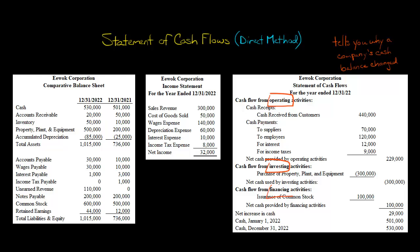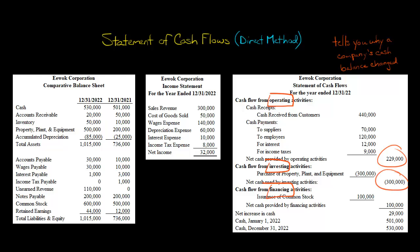Then we've got cash flow from financing activities. Financing activities have to do with transactions that relate to the company's owners — the shareholders — such as issuing or repurchasing common stock, and also transactions with the company's creditors, like issuing or repurchasing debt. If the company pays dividends to its shareholders, that would be in there too. If you add all three sections together, that gives you the change in cash, which should match what you see from comparing the last two balance sheets.